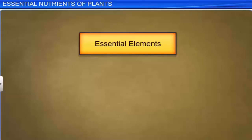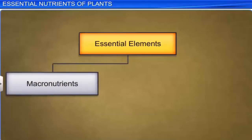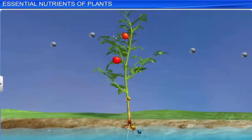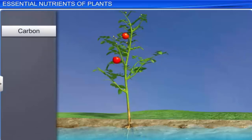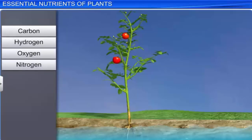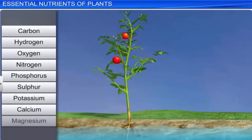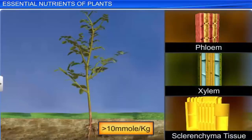Based on the above criteria, the essential elements are further divided into macronutrients and micronutrients. The elements that are required by a plant in large amounts are called macronutrients. Carbon, hydrogen, oxygen, nitrogen, phosphorus, sulfur, potassium, calcium, and magnesium are macronutrients. Plant tissues contain more than 10 m mole per kg of dry weight in macronutrients.